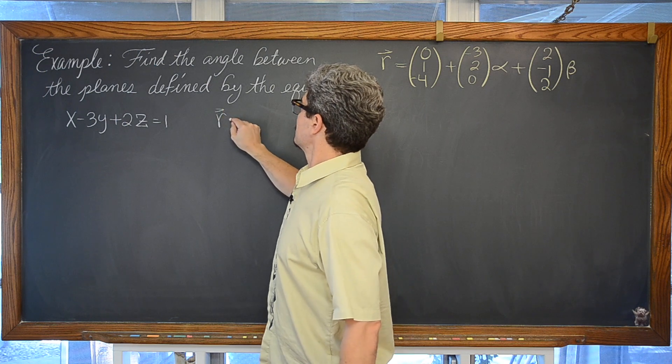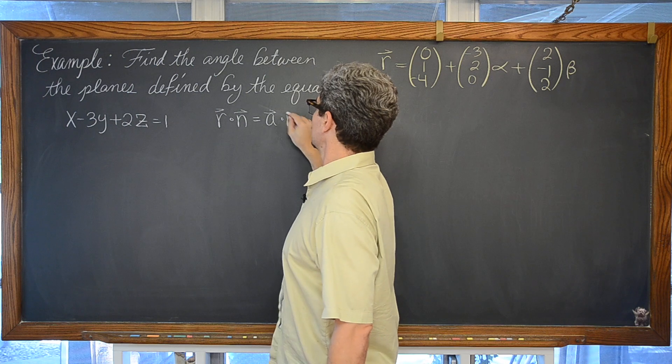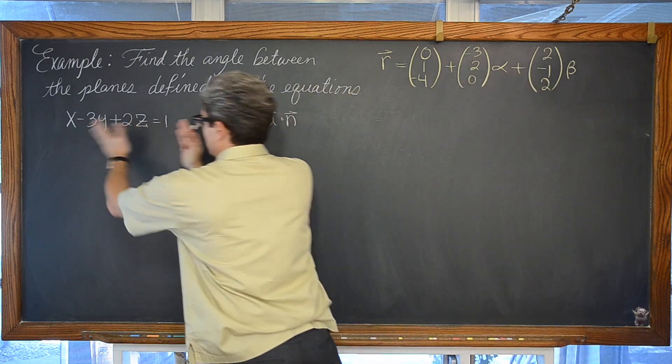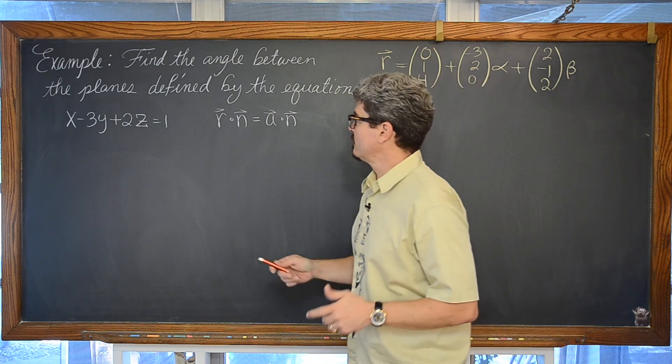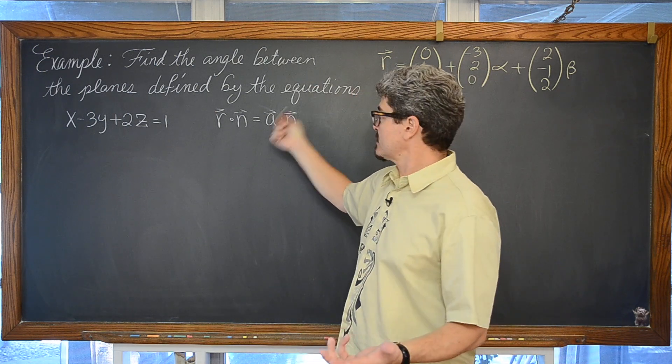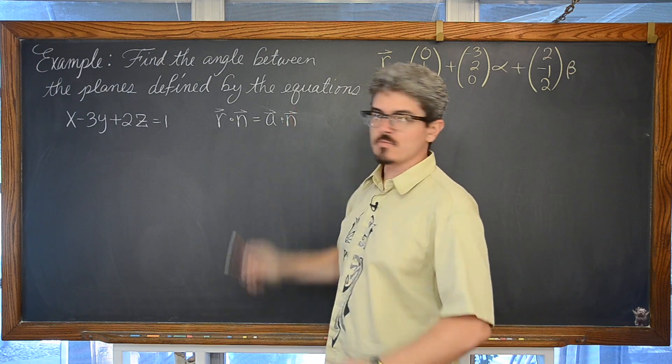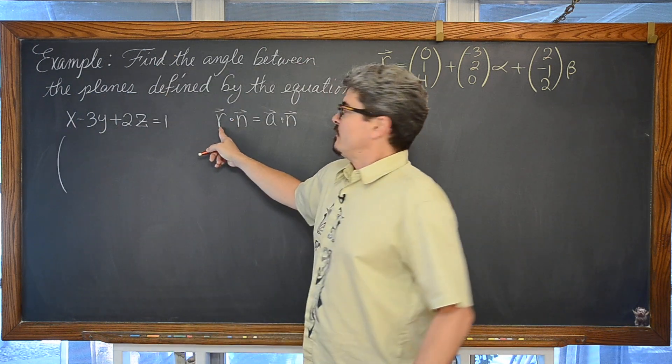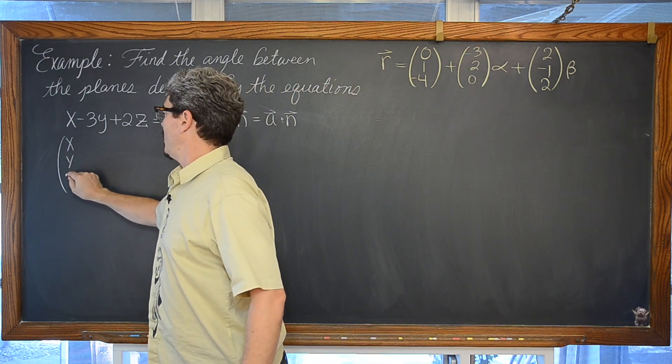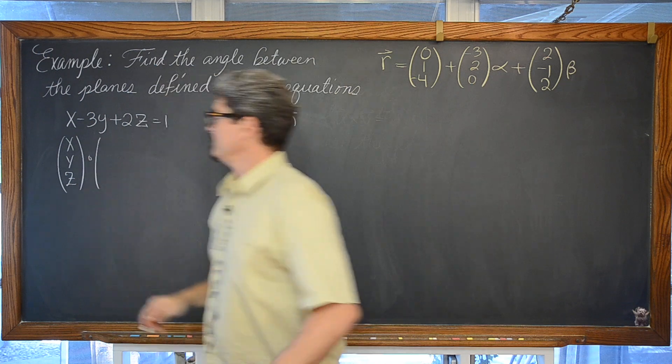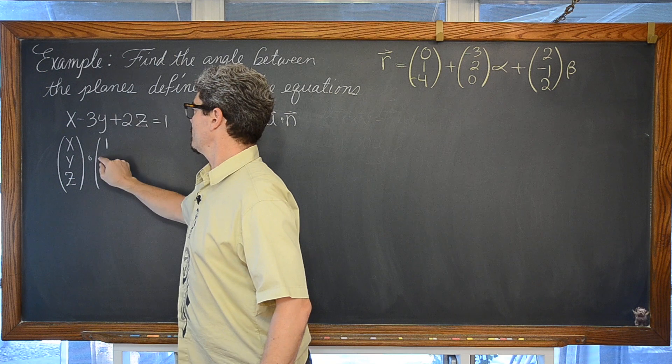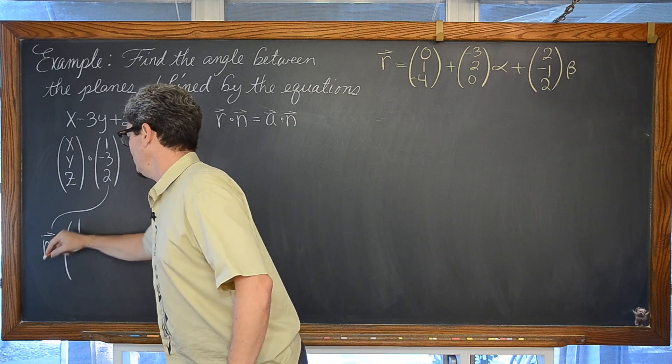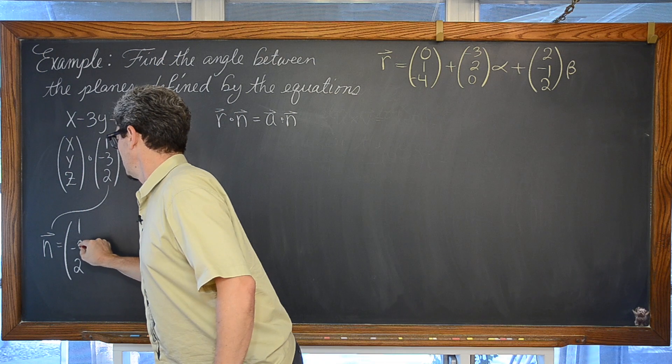If we're looking for a normal vector, that's awesome because vector r dotted with vector n equals vector a dotted with vector n. This equation for a plane using a normal vector just comes right out and gives us an equation in Cartesian format. We have vector r, a position vector for every general point on our plane, x, y, and z being dotted with our normal vector, our coefficients, one, negative three, and two. Here is our normal vector, vector one, negative three, two, for one of our planes.